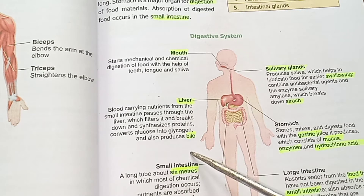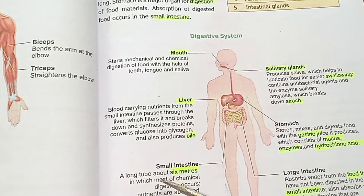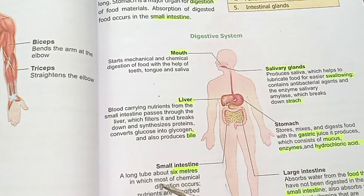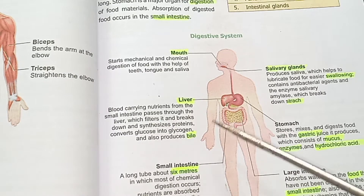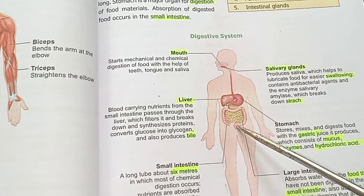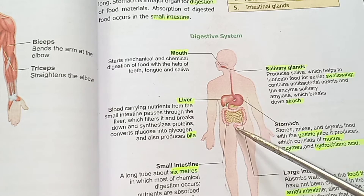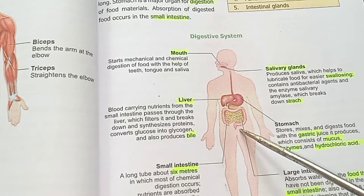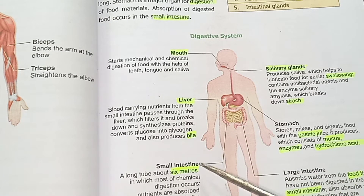The small intestine is a long tube, about 6 meters, in which most of the chemical digestion occurs.